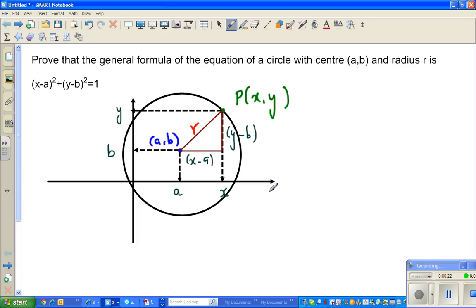So what I've done is this is my x-axis and this is my y-axis. I've drawn a circle with center (a,b). So if this is the center, this point would be a on the x-axis and this point would be b on the y-axis.